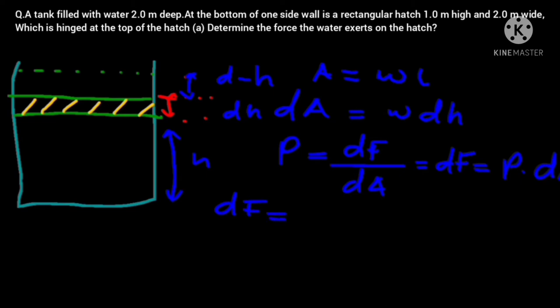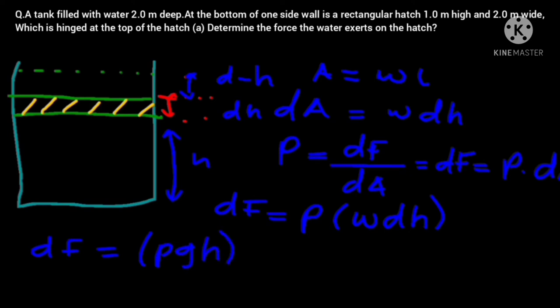So dF is equal to, just replace that, so dF is equal to... We know that pressure is equal to ρ times g times h, so we multiply by that, times w times dh, because we know pressure is equal to ρ or density times gravity times height.